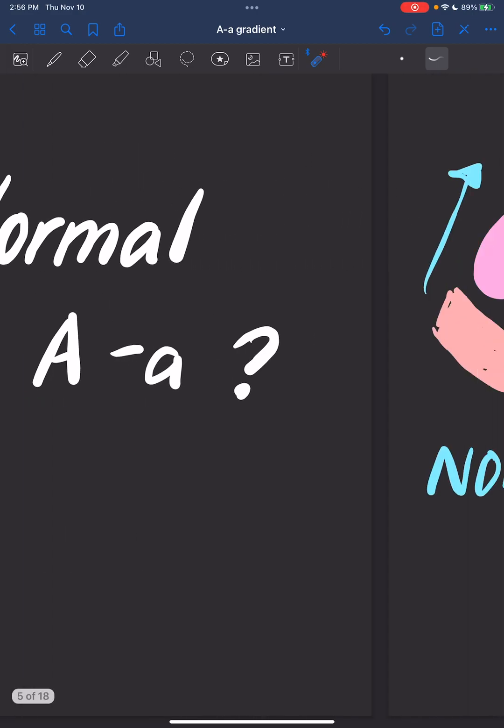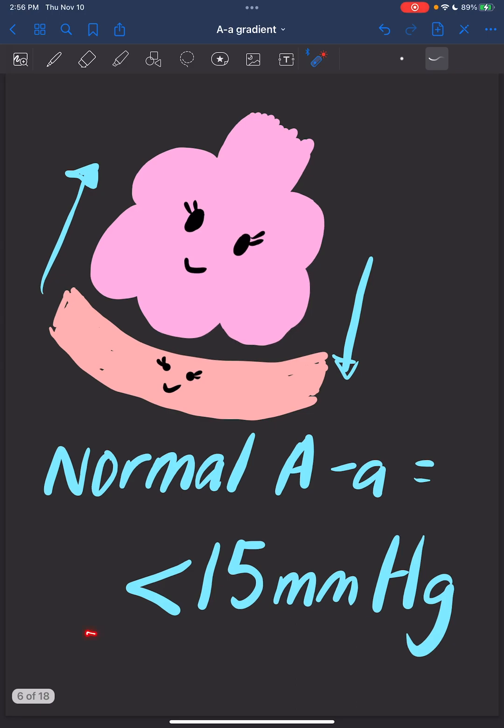What is a normal A-a gradient? Our normal A-a gradient is going to be less than 15 millimeters of mercury. Remember this number because we're going to practice.